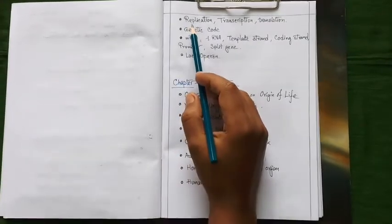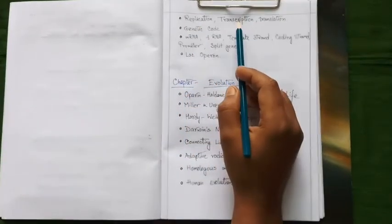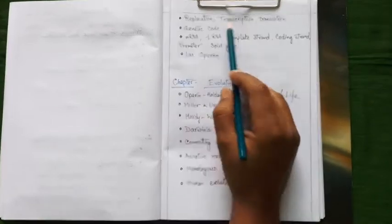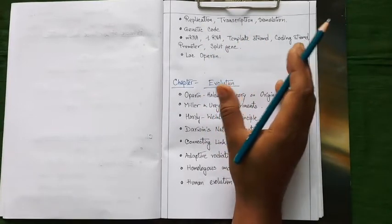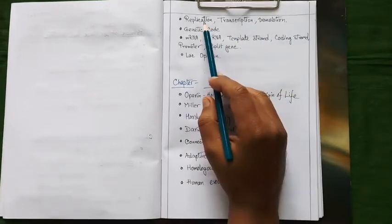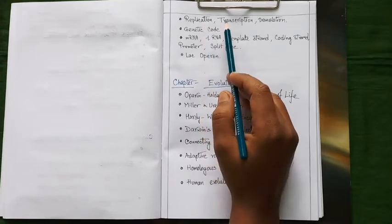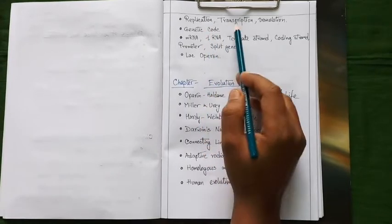Our next topic under molecular biology is replication, transcription, translation. Although these three topics are quite large by their content, you need to memorize their detailed mechanism with diagram along with different enzymes involved in these processes.